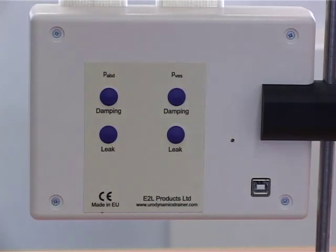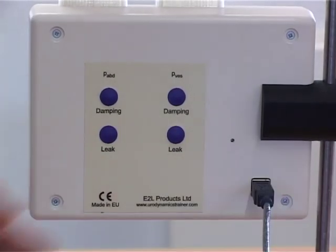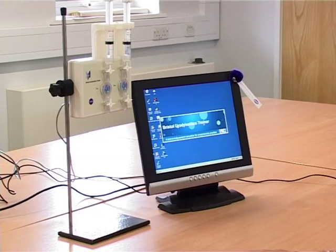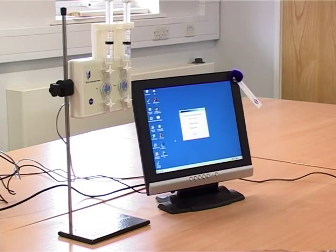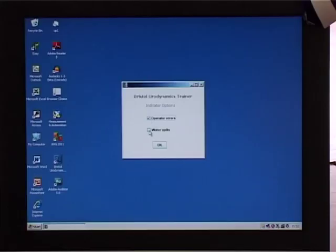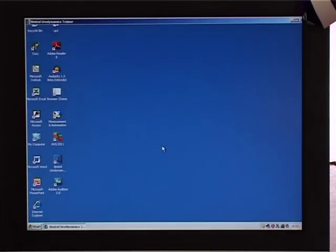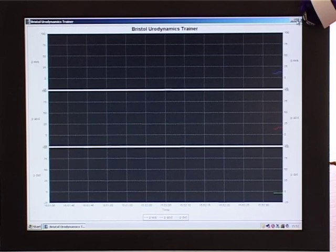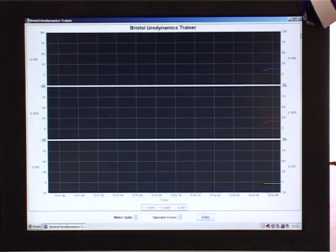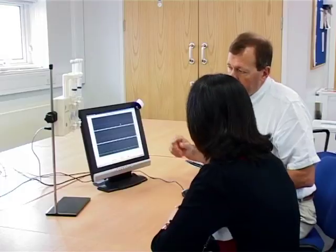The unit is connected to the computer using the USB connector on the rear. For training, select both error alarms and ask the trainee to set up the system for zeroing to atmosphere at the start of the test.